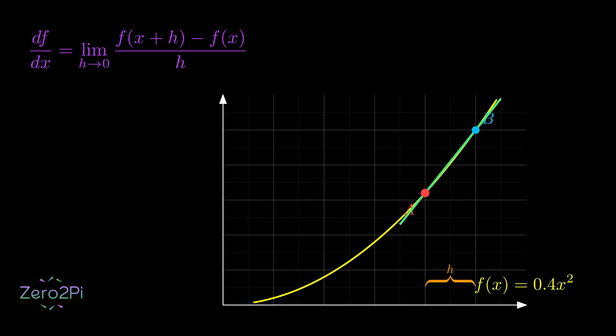Its slope gives us the average rate of change between a and b. But as we move point b closer and closer to a, the distance between them, that little h, gets smaller.